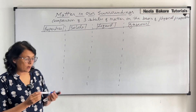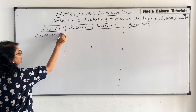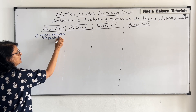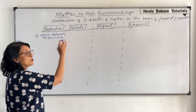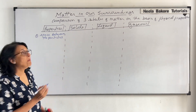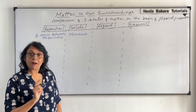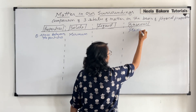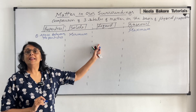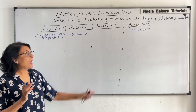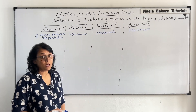The first property we are talking about is space between the particles. In case of solids, the space between the particles is minimum. In gases, the space between the particles is maximum, as we have already discussed in previous videos. In liquid, there is space but it is not as much as in gases, so we say it is moderate — there is space but not too much.